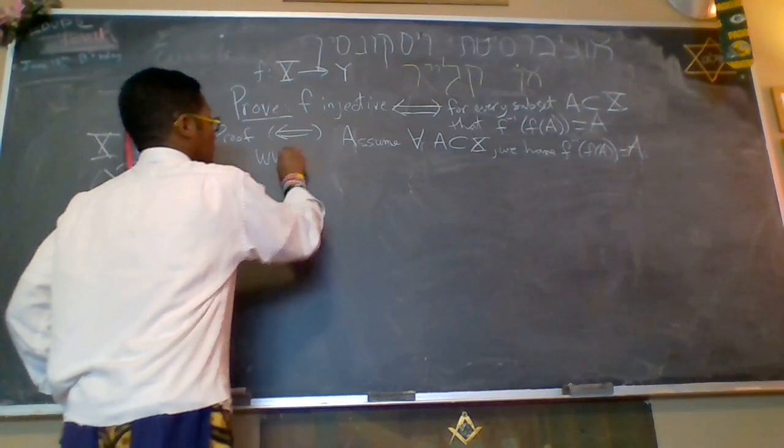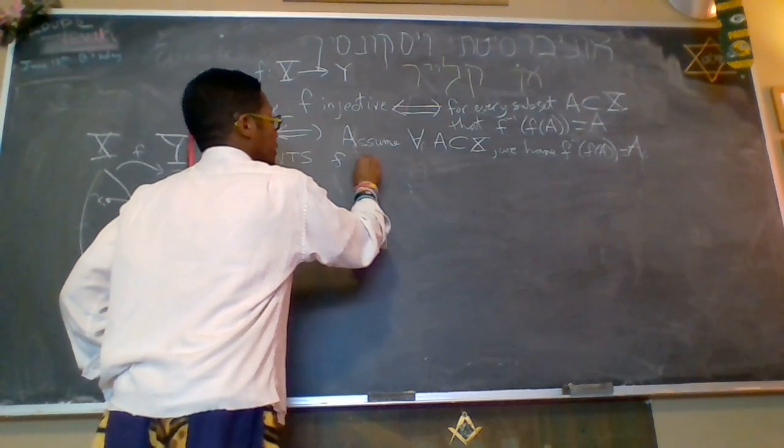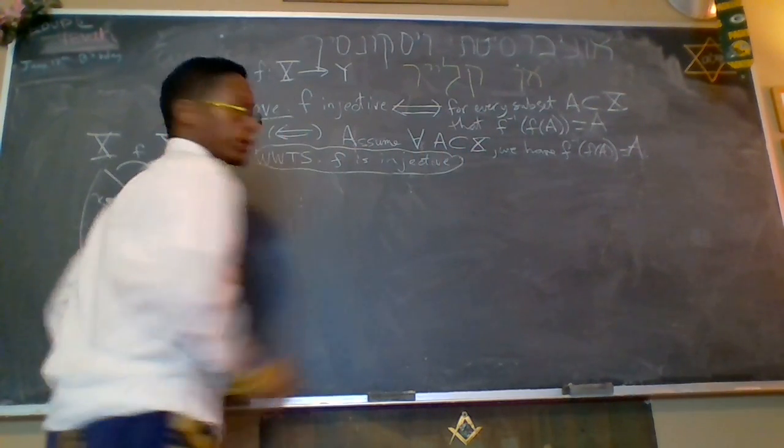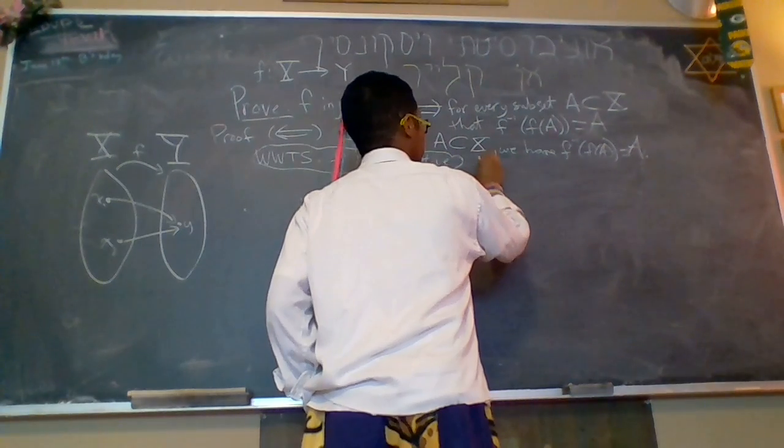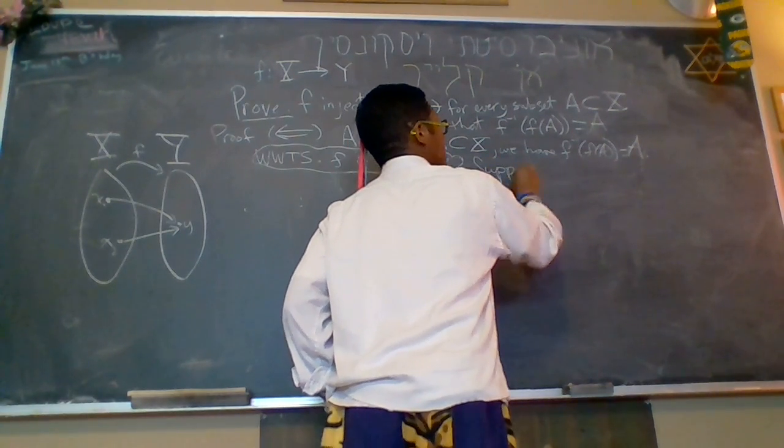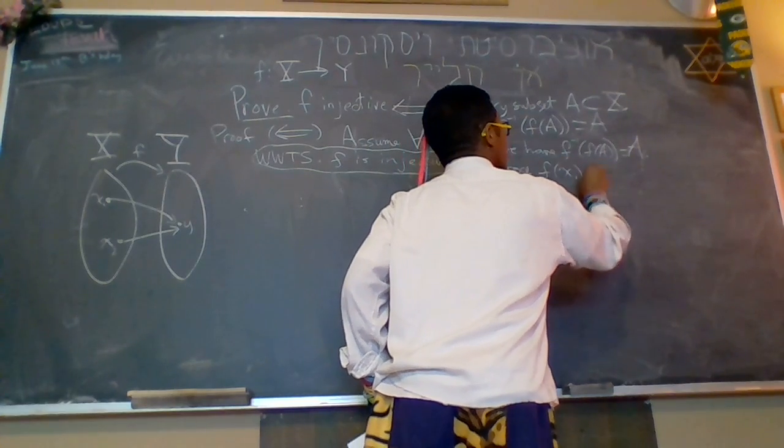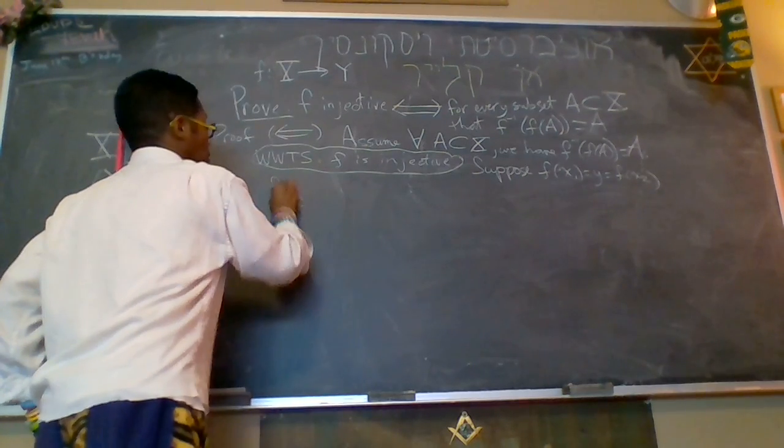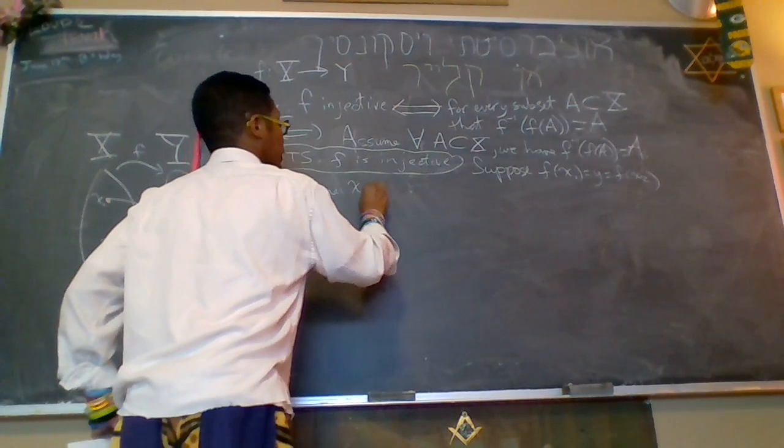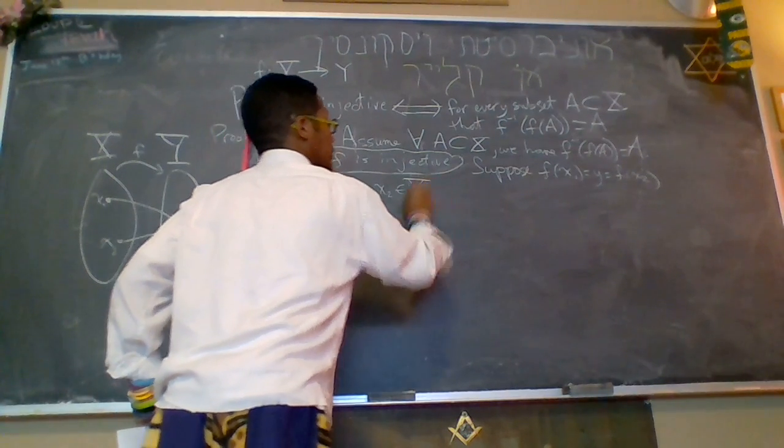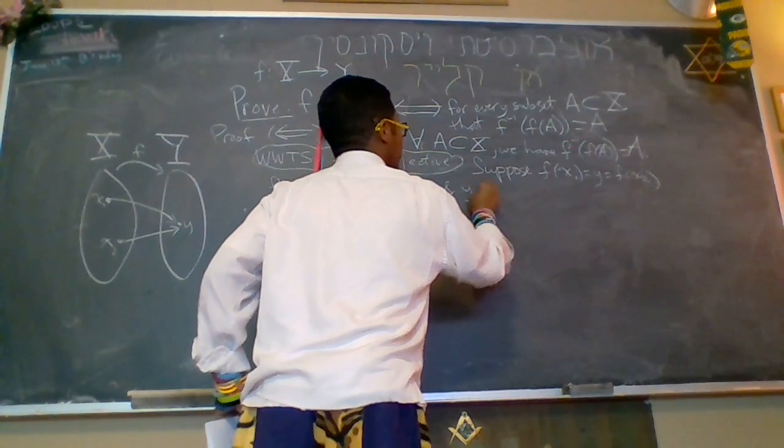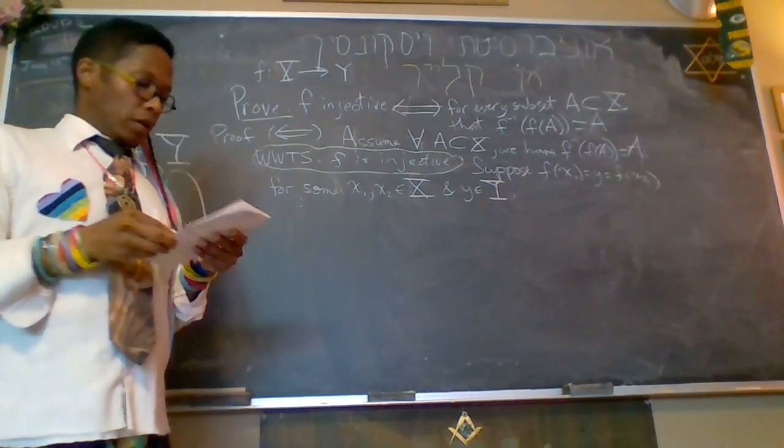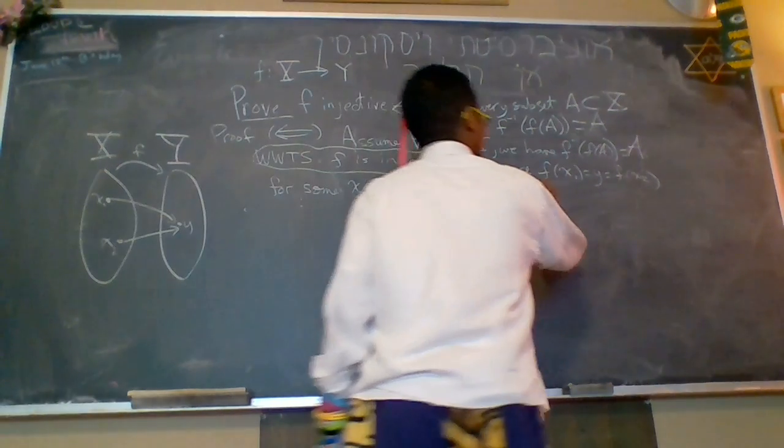We want to show that f is injected. So we start injected proofs that way we always do. We say suppose f of x1 equals y equals f of x2 for some x1, x2, and capital X, and y in capital Y. So it suffices to show x1 equals x2, right?